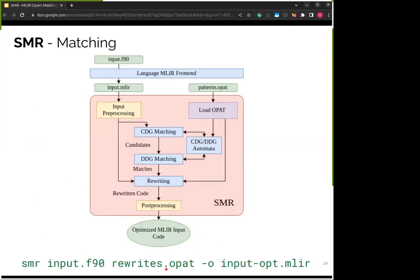The second command loads the pet file and performs the matching process. We take the input file and compile it, while also loading the object pet file to get the automata used for matching. Matching occurs in two stages: first, CDG matching, which accounts for just the control flow of the input and the pattern. Whatever passes the first stage goes to the second stage, which looks at the data flow of both input and pattern. If the second stage finds a match, it's passed to the rewriting stage and replaced by whatever specification is in the pet file, yielding the optimized MLIR input code.